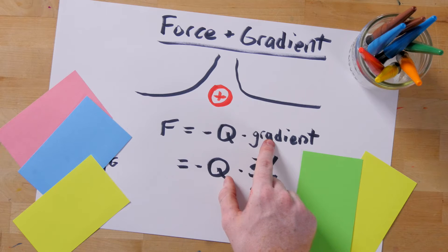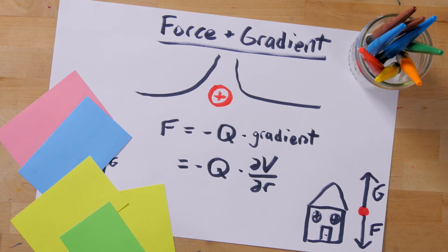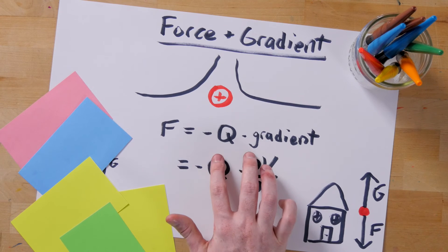Any time you have a gradient, you'll have a force in the opposite direction for positive quantities. Let's first think about this as it relates to gravity. The gradient in gravitational potential points up toward the sky, so if the gradient points up, the force must point down. That's why the force of gravity pulls things to the ground. Now let's relate this to electricity.